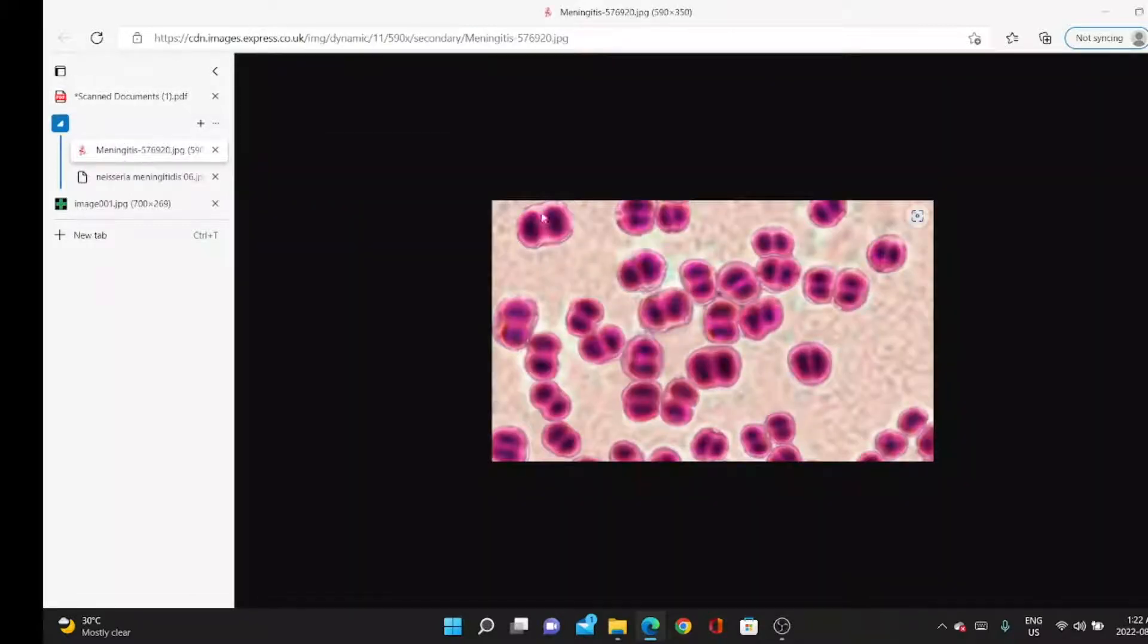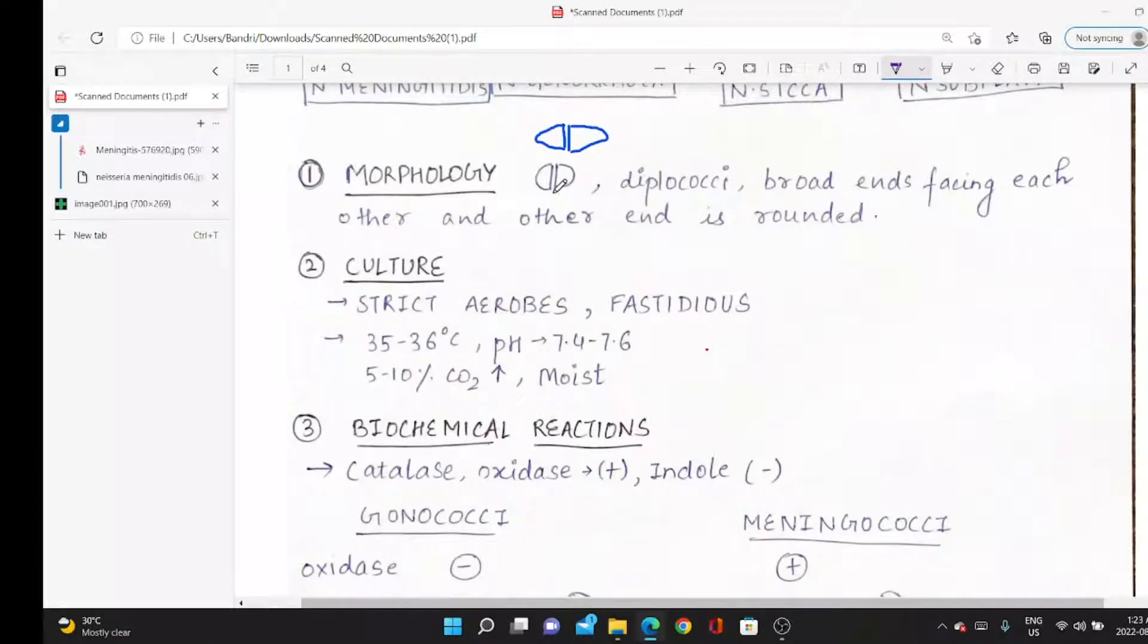Talking about the morphology of Neisseria meningitidis: it is a diplococcus, arranged in pairs. The broad ends of adjacent bacteria are attached, and the other end is rounded. It looks like a half moon.